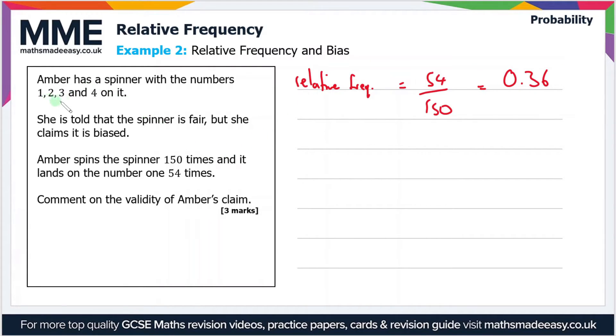Now there's four numbers, so you'd expect the probability—the theoretical probability—you'd expect the probability to be a quarter, or 0.25. But her relative frequency and the probability that she's determined from the experiment is much higher than the theoretical probability.